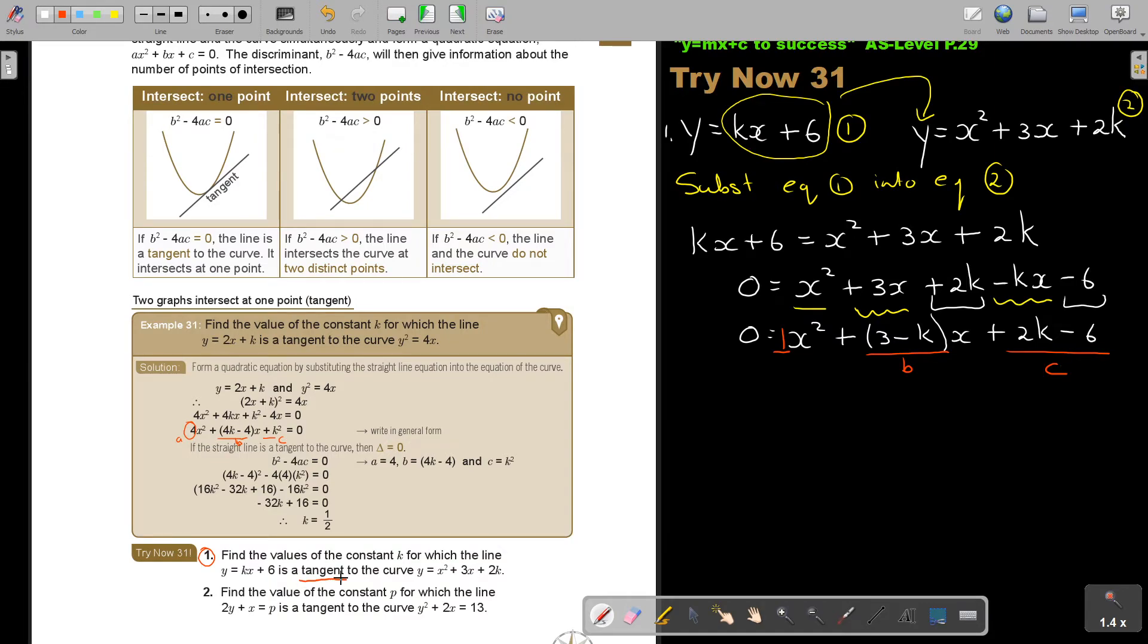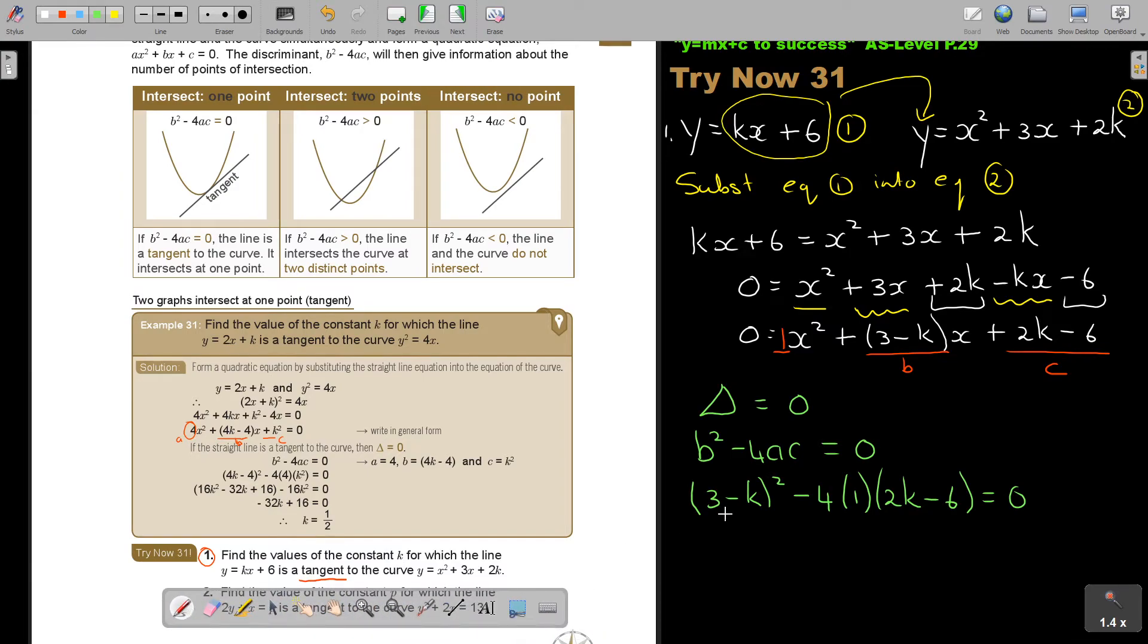Now, because I'm telling you it's a tangent, now you will know that the discriminant will be equal to 0 of this combined equation. This discriminant is B squared minus 4AC, and that's equal to 0. In the place of B squared, it's 3 minus K squared minus 4AC. If I work out this, this is 3 times 3, it's 9 minus 6K plus K squared. And this is minus 8K plus 24 is equal to 0.